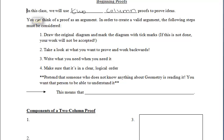You can think of a proof as an argument, and when you are doing a proof, you want to consider the following steps. First, you have to draw the diagram that you're given, the original diagram, and mark it with tick marks. If this is not done, your work will not be accepted.